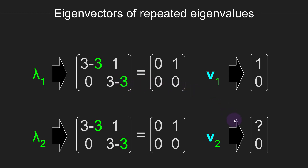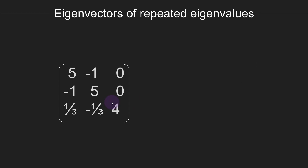So that's just one of the possibilities for a repeated eigenvalue — there is another possibility. Take this matrix for example. Its eigenvalues are 6, 4, and 4 — two repeated eigenvalues and one distinct eigenvalue. Let's compute the eigenvectors associated with these eigenvalues. I encourage you to pause the video, work through this yourself, and see if you can come up with the three eigenvectors.